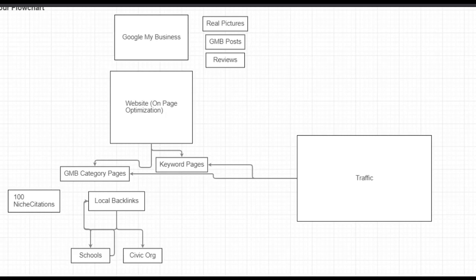The next thing you need to do is set up your website. When you set up your website you need to use a program — either Yoast, which is a WordPress plugin that checks your optimization on your home page, making sure you're using keywords enough times but not too many times. We also use one called Rank Math. I'll put all these programs in the description below. Then we use a program called Page Optimizer Pro — once the website is written, Page Optimizer Pro really dials in and focuses on each page to make sure it's fully optimized.